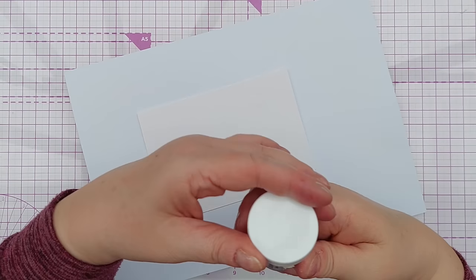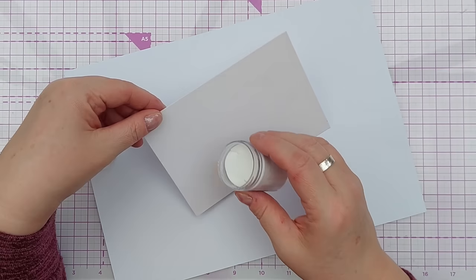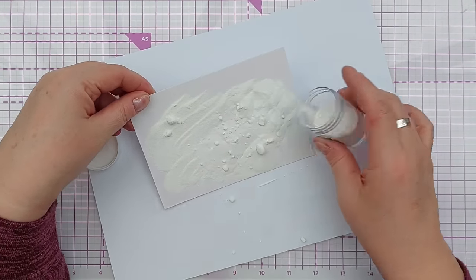So just going to ink up my image again with embossing ink, and I'm going to sprinkle over white powder. You can use any embossing powder you like. This is super fine detail embossing powder.